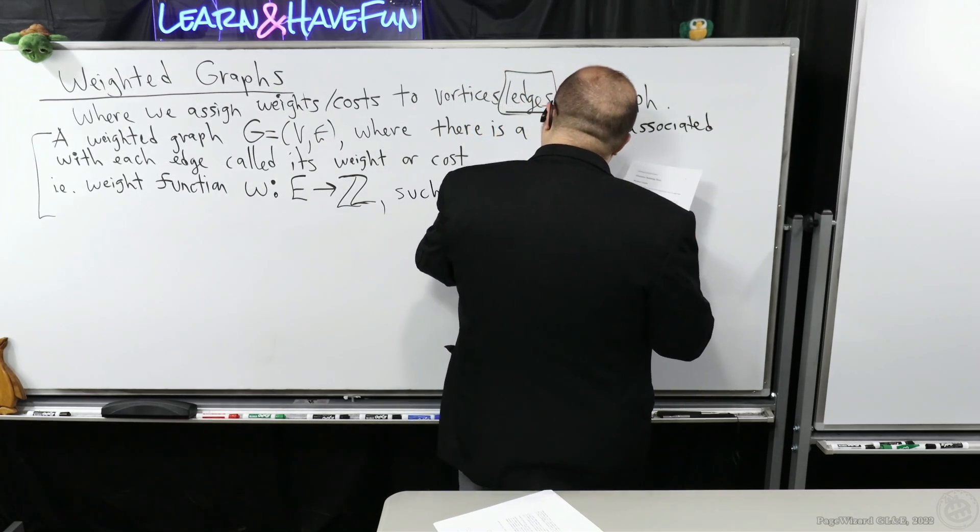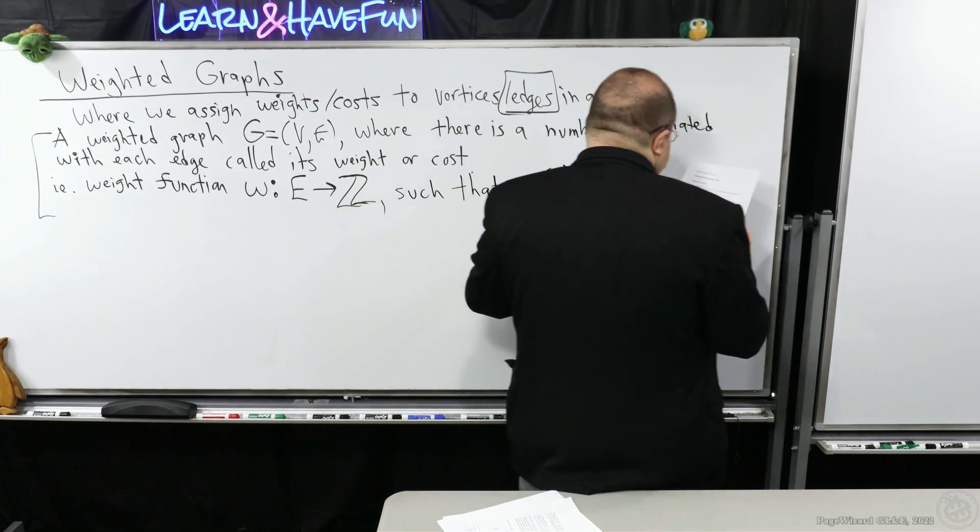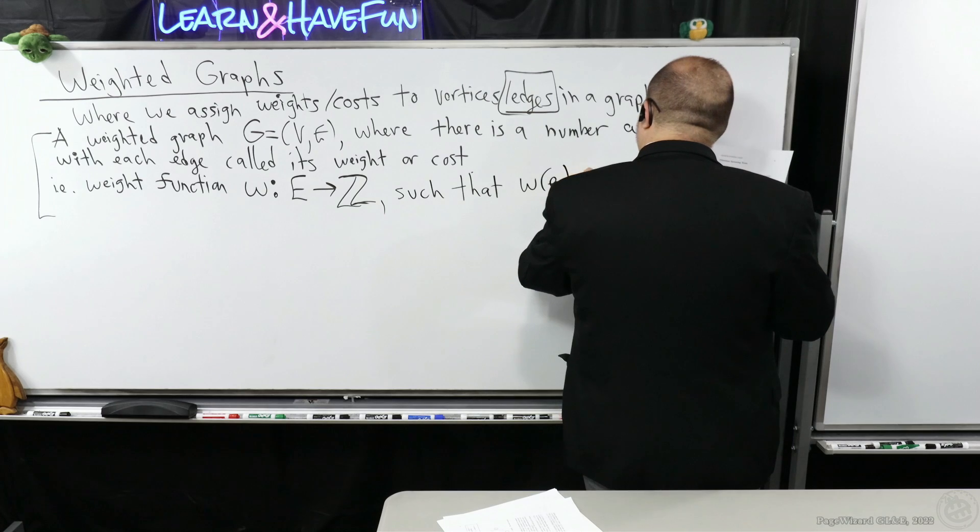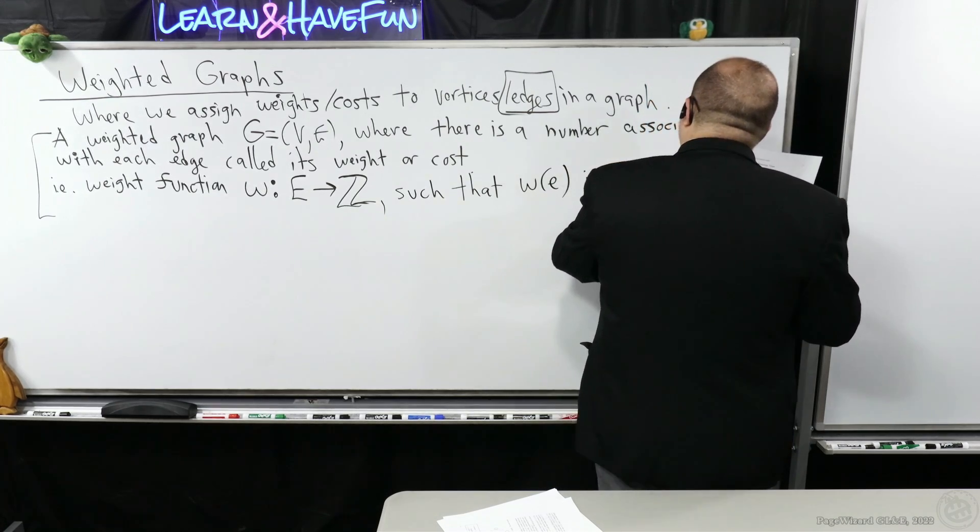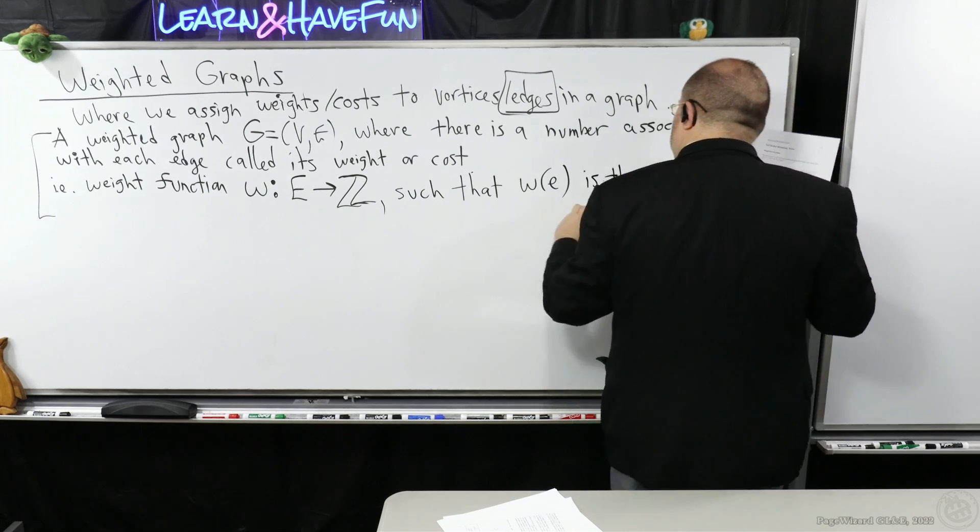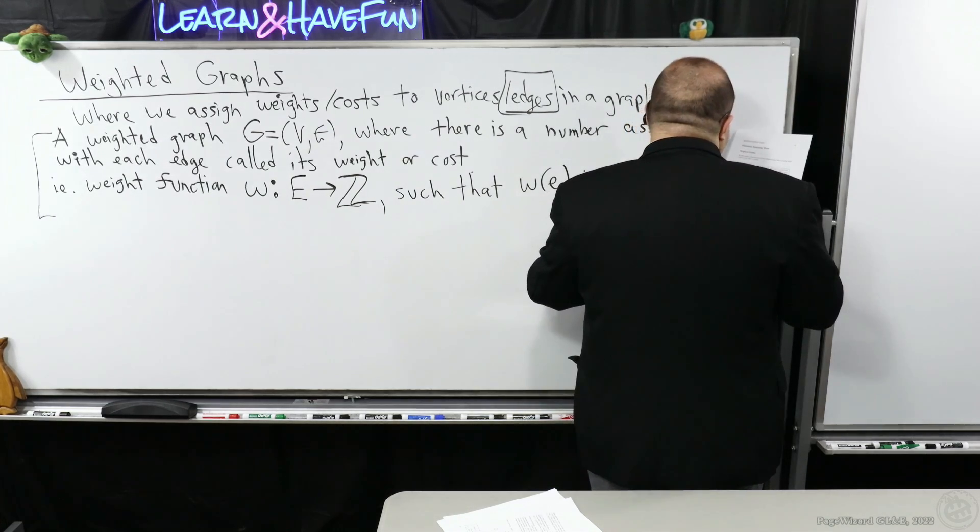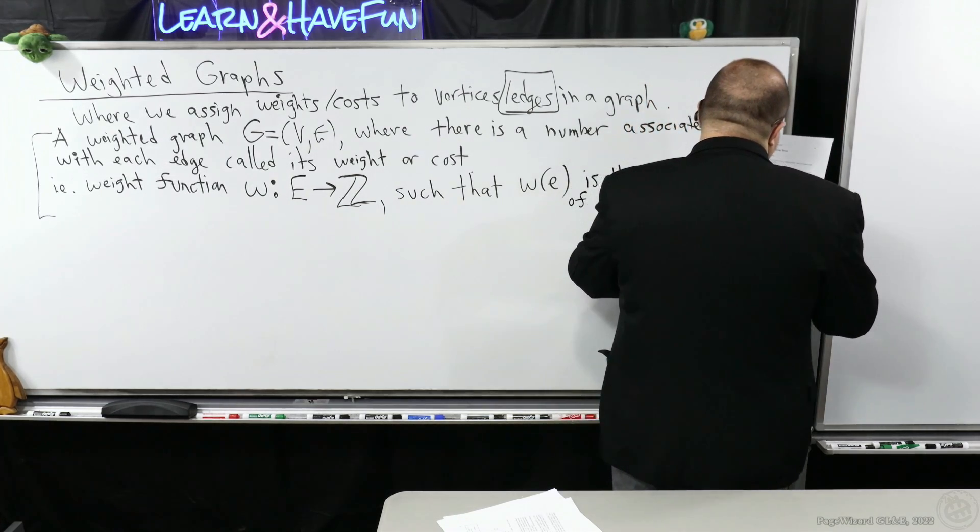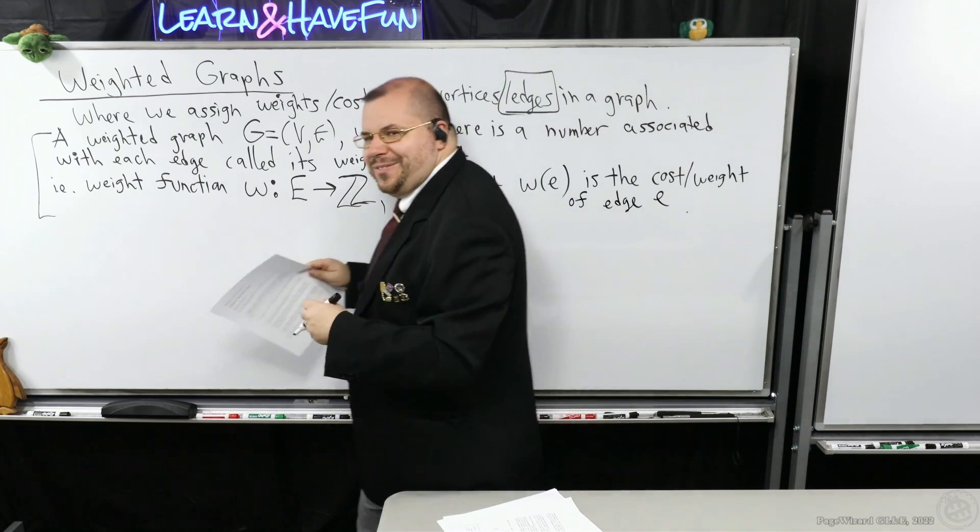Such that w of E, where that's an edge, is the cost or weight of edge E. I think that's pretty straightforward, right?